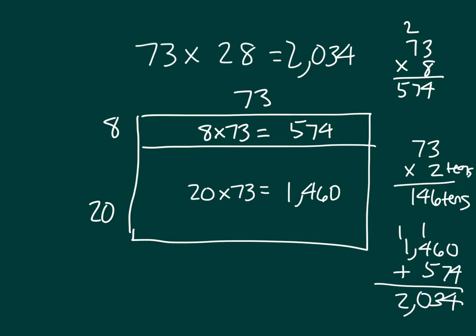73 times 28 equals 2,034. So in this case, I've just used two partial products to be able to find my answer for 73 times 28.